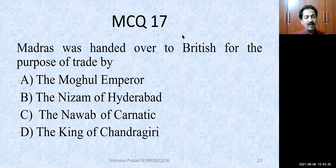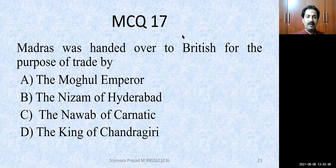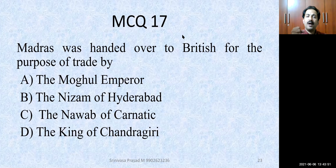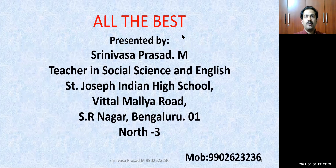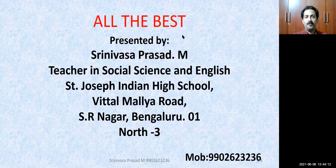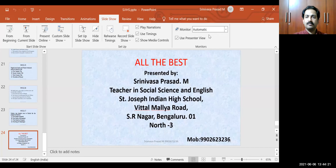Now we are at the last question, MCQ number 17 of the 1st lesson: Advent of Europeans to India. Madras was handed over to the British for the purpose of trade by — the King of Chandragiri. Those who have read the textbook can answer, as all questions will be direct and simple, but you need thorough command over textbook content. I wish you all the best. I will meet you in the next class for the 2nd lesson in history. Thank you.